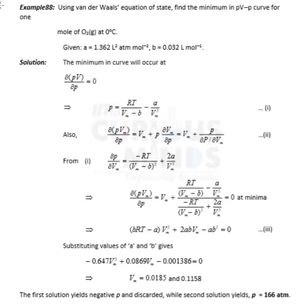What's up guys, hope you are doing great. Let us solve this problem using the van der Waals equation of state: find the minimum in the PV-P curve for 1 mole of O₂ at 0.0°C. Given: a = 1.362 L²·atm/mol² and b = 0.032 L/mol.